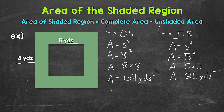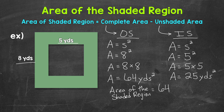Now we have all of the information we need to find the area of the shaded region. The area of the shaded region equals: we take the area of the larger outside square, 64 square yards, and we subtract the area of the smaller inside square, the unshaded area, 25 square yards. 64 square yards minus 25 square yards gives us an area of 39 square yards.